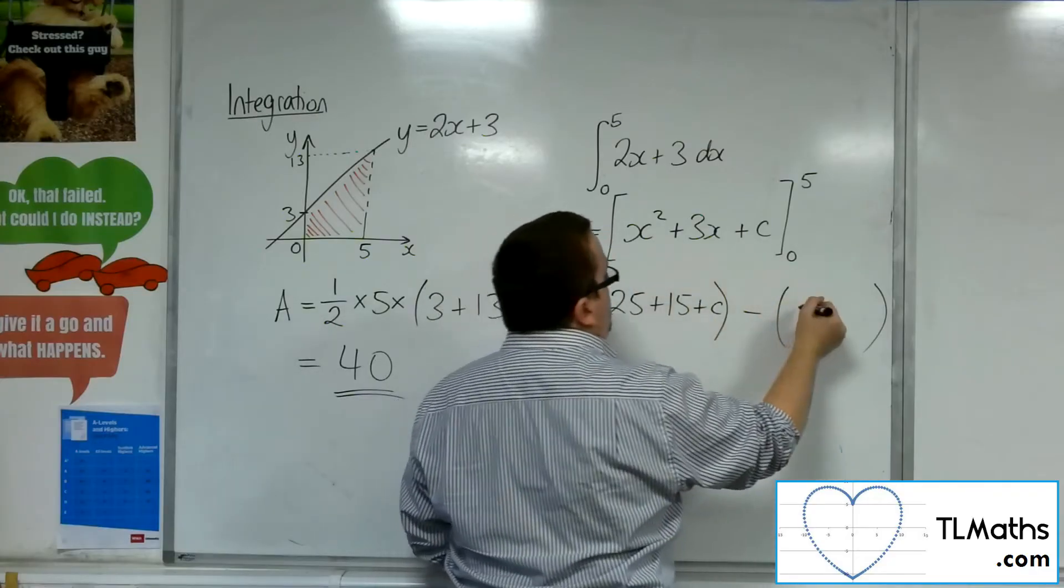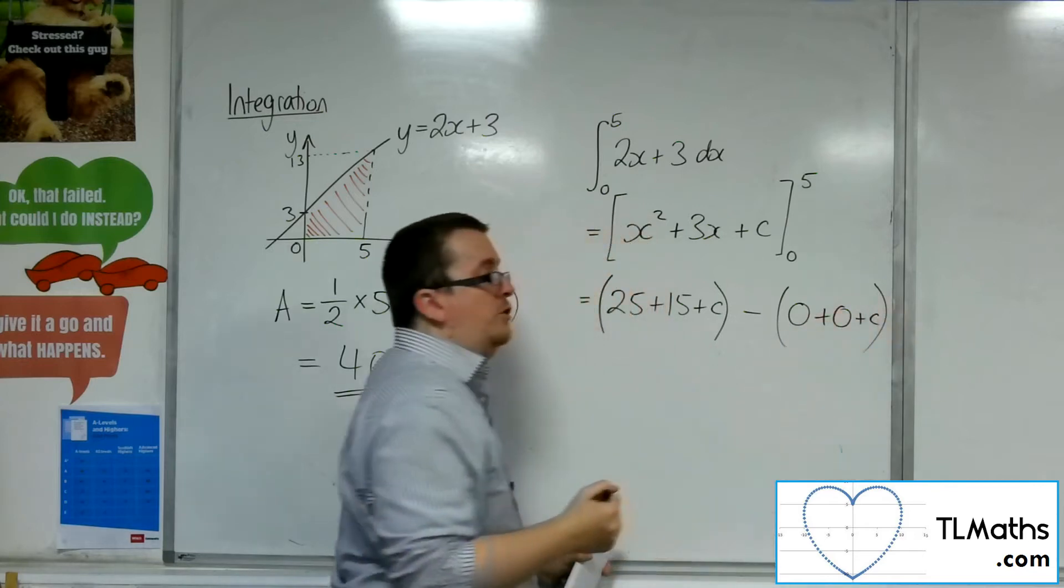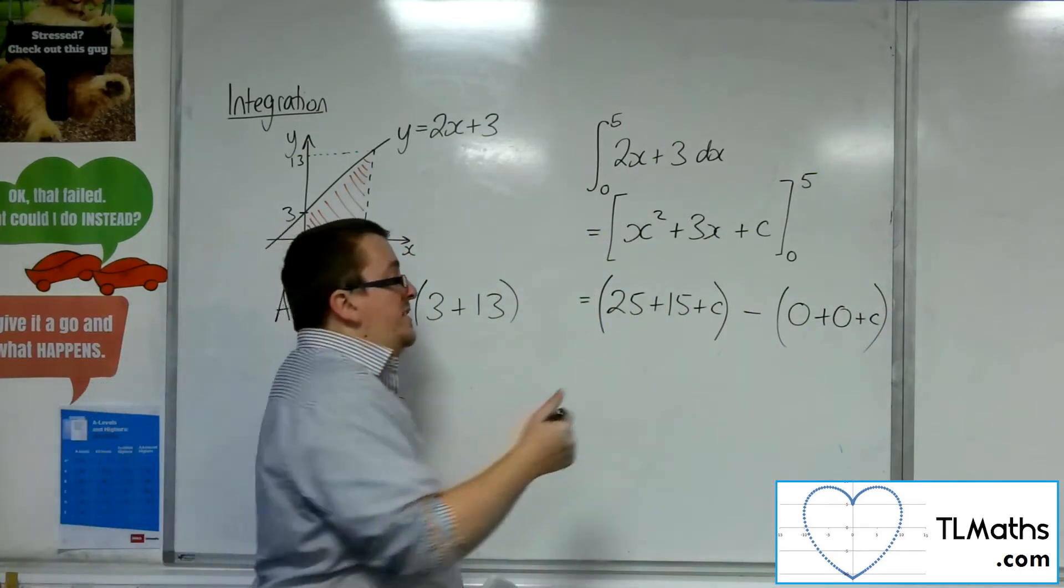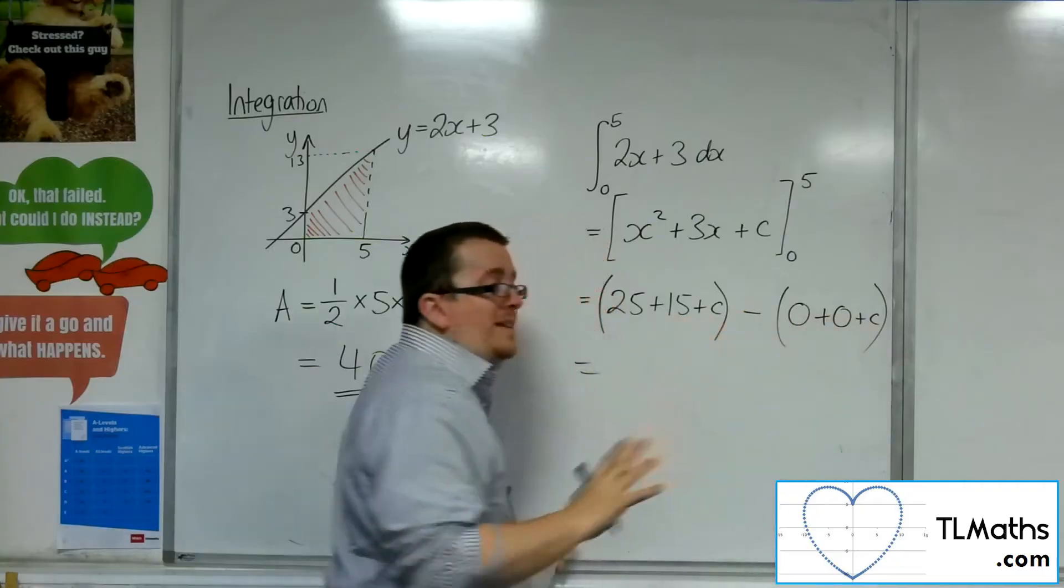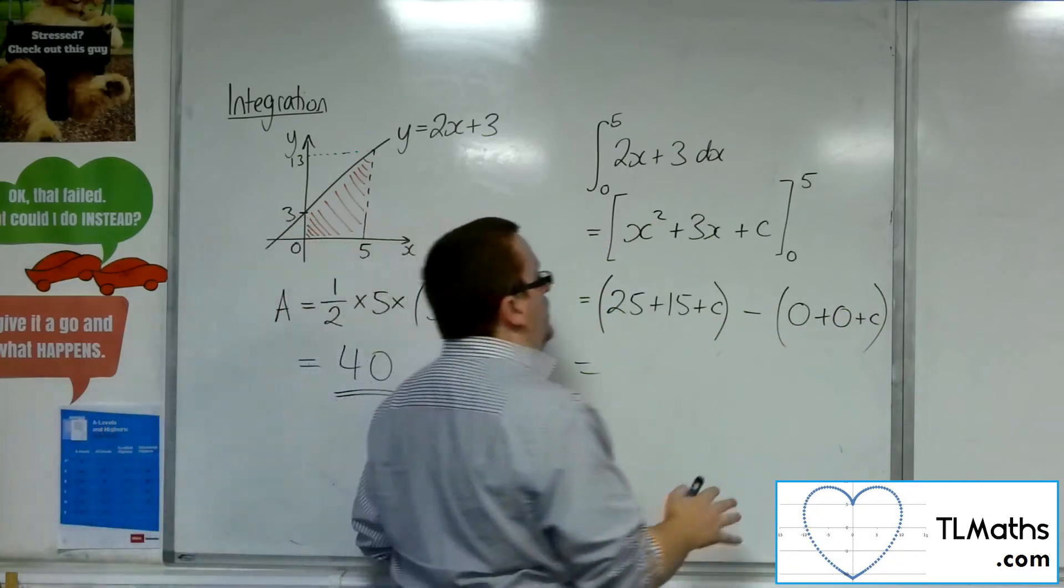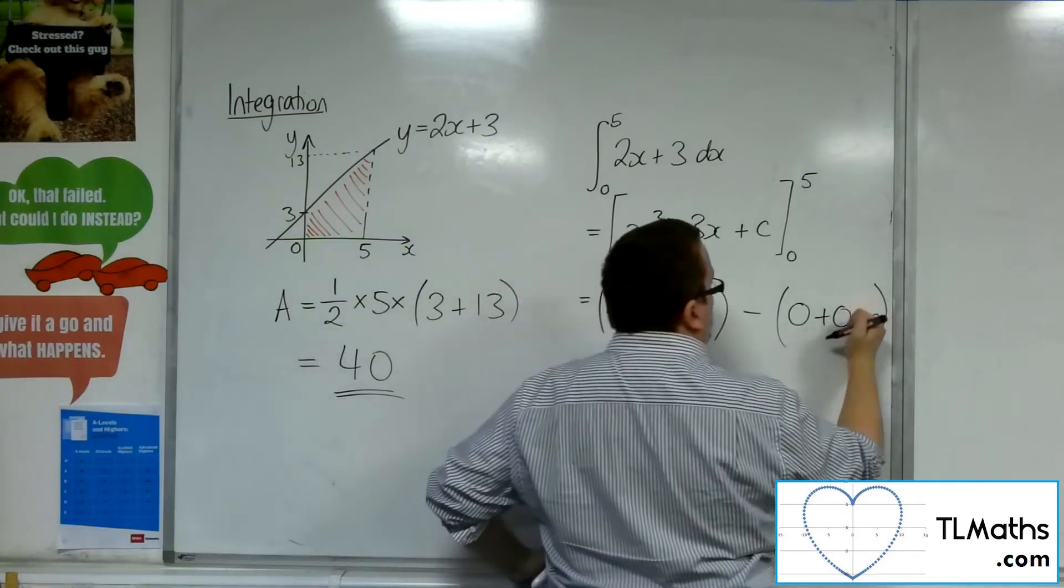Substituting the 0, I'm going to get 0 squared plus 3 lots of 0 plus the c, the constant of integration. And what you'll notice here is that the c, take away c, these bits will always cancel. The constant of integration will go. And so really, I don't need to put it in at all.